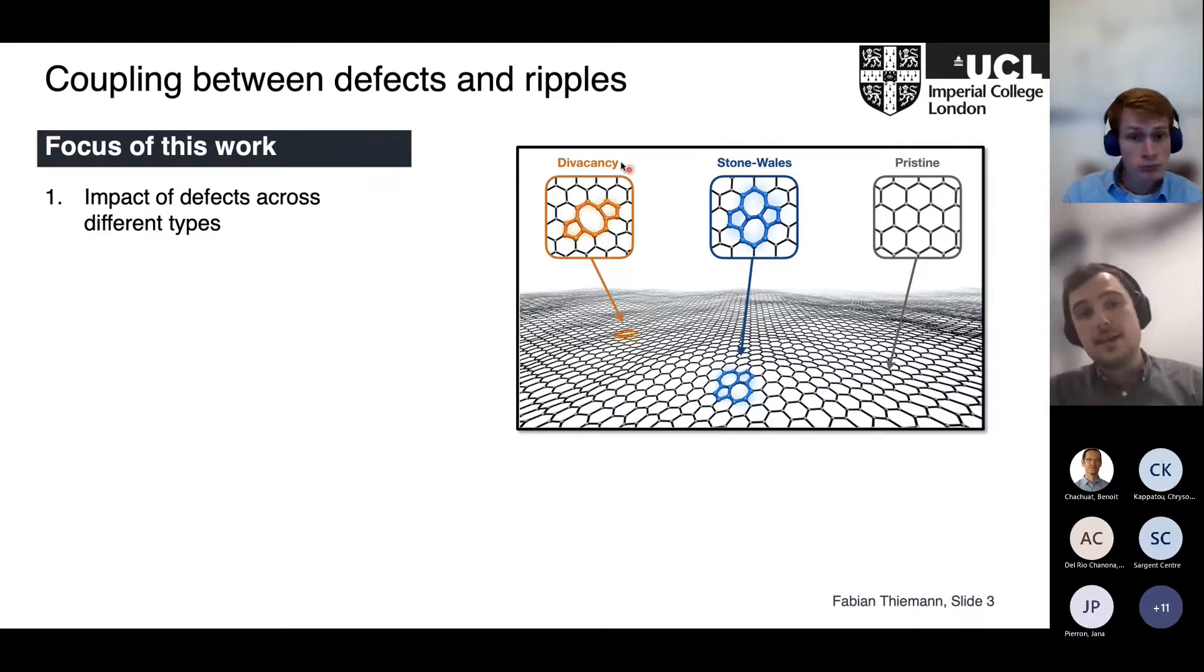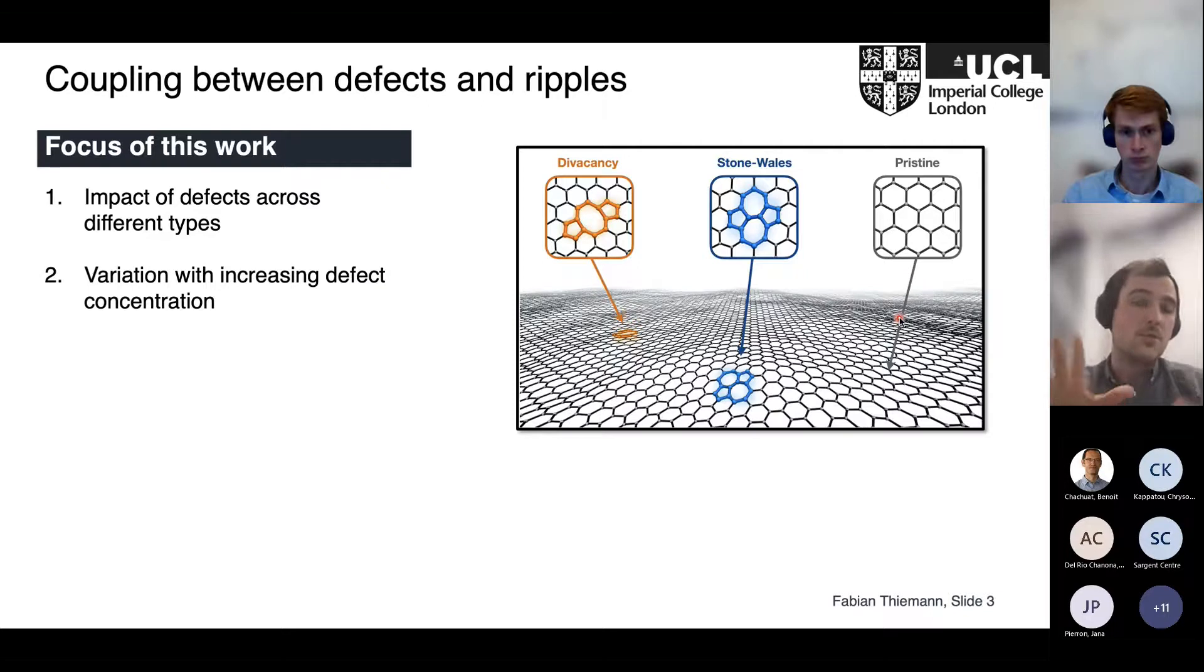We're focusing on two different, very specific and simple defects. One is the divacancy where you just remove two atoms, shown here in orange color. The other one is the Stone-Wales defect, where we just rotate one carbon-carbon bond. It's very simple how we approach this. We compare that to pristine graphene, and then we increase the defect concentration and see what we can observe and try to understand any mechanisms.